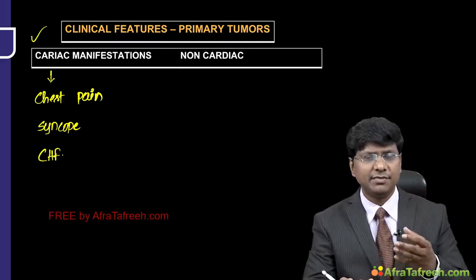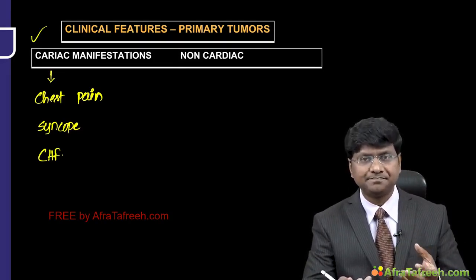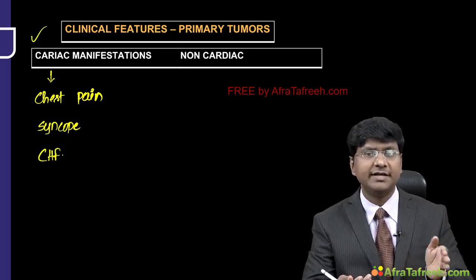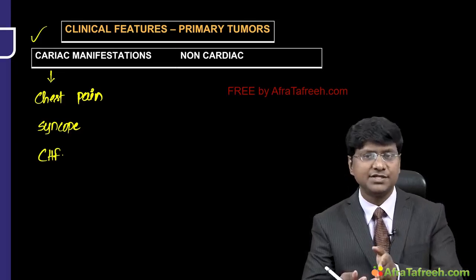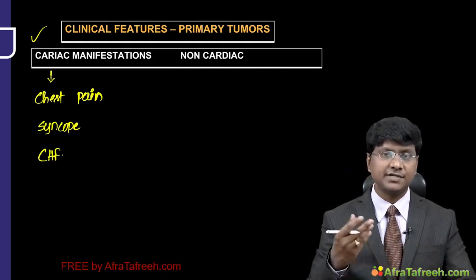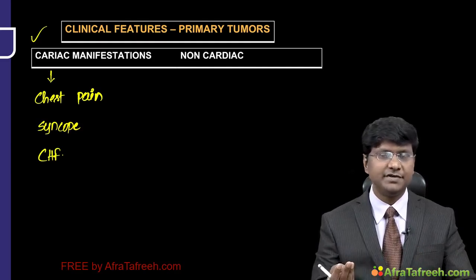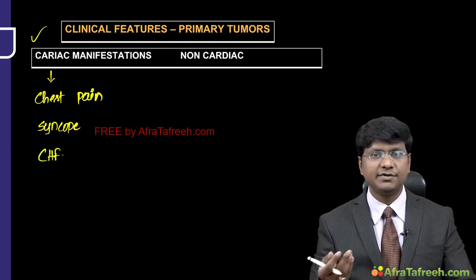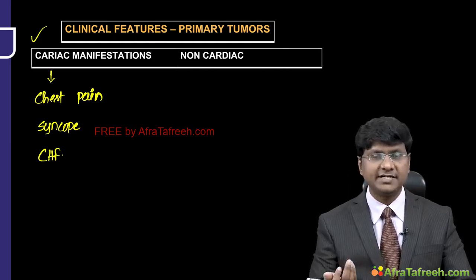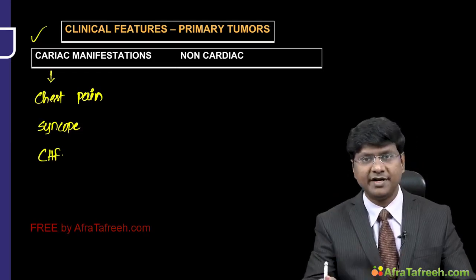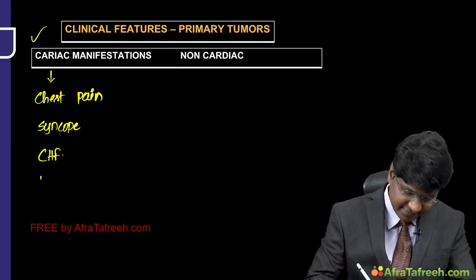Another manifestation is congestive heart failure. When adequate blood supply is not available to the myocardium, the heart may go into congestive heart failure with both left-sided and right-sided features. Left-sided features include dyspnea — due to pulmonary edema — and fatigability from decreased cardiac output. Right-sided failure presents with raised JVP, tender hepatomegaly, ascites, and pedal edema.